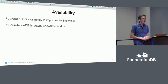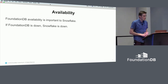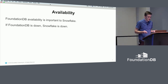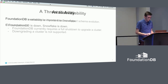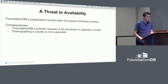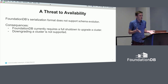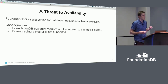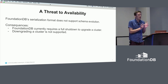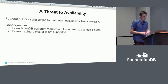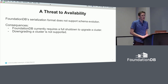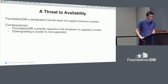For motivation, availability of FoundationDB is very important for Snowflake. If FoundationDB is down, then Snowflake is down. The reason I'm talking about this is that the current serialization format does not support schema evolution. The way to think about it: if you have a message with two fields, A and B, it serializes A and B and concatenates them. So if you want to add a third field, that won't work. If you read it with something that expects only two fields, something will happen — and we don't want that.